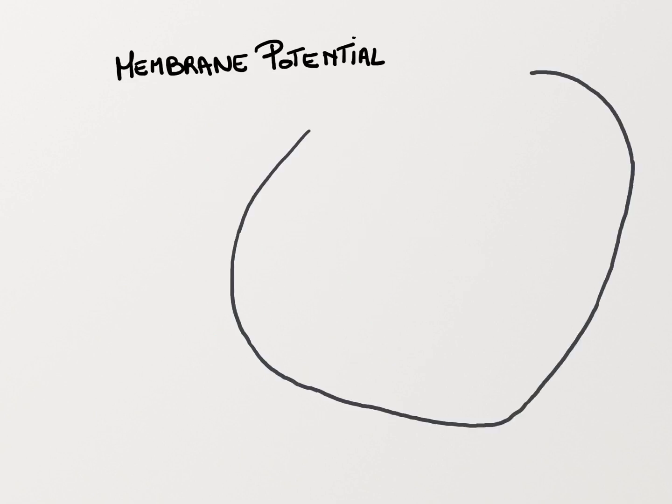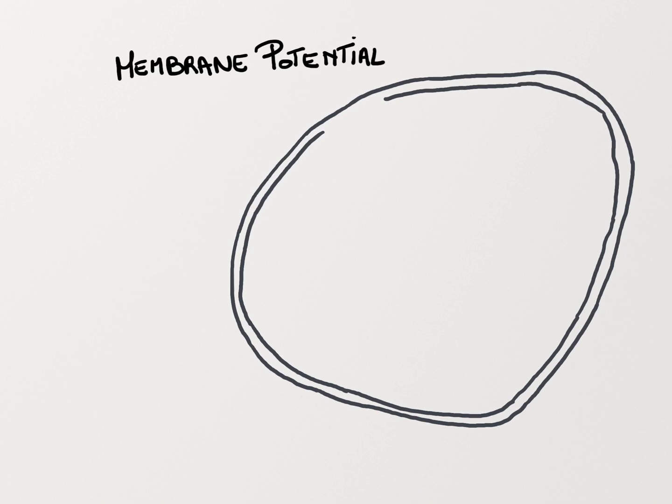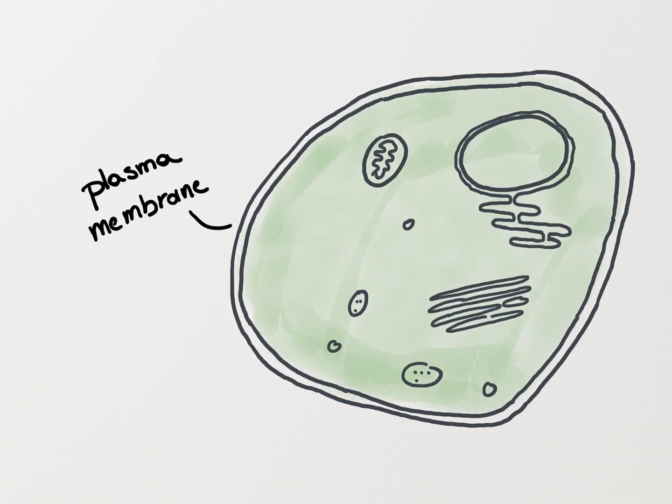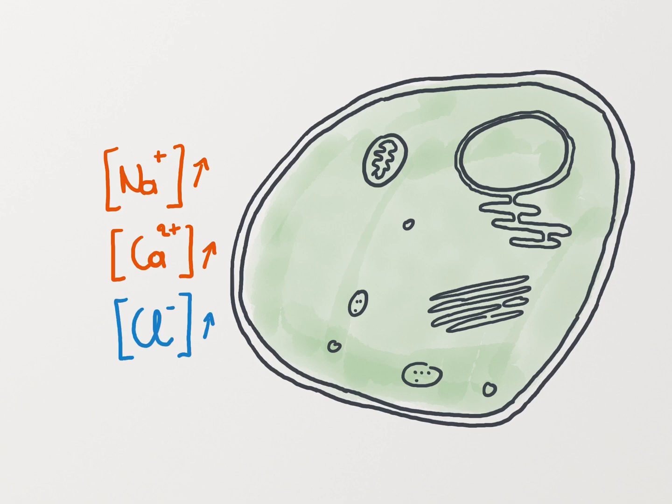Let's take this to the cell. Each side of the cell membrane has both positive and negative ions. In general, there is a higher concentration of positive sodium and positive calcium on the outside of a cell, compared to the inside. Those positive ions are balanced by a high concentration of chloride ions that are negative.